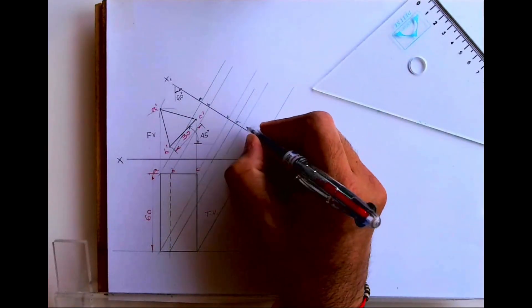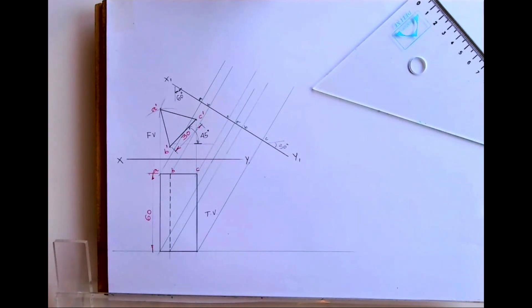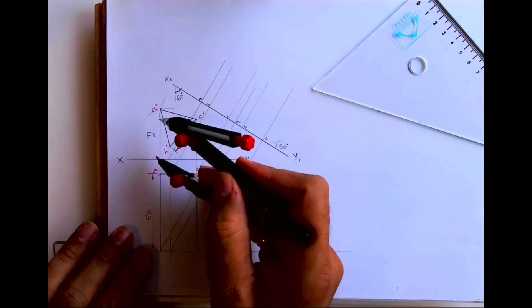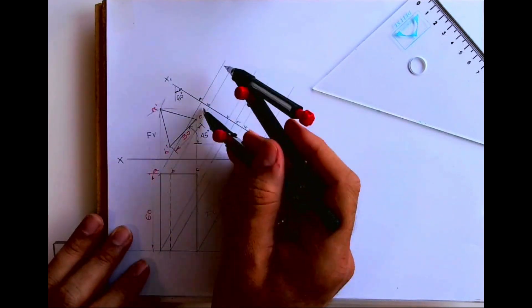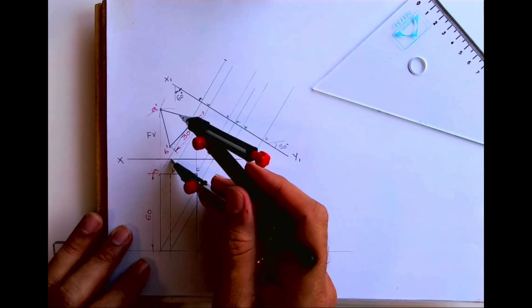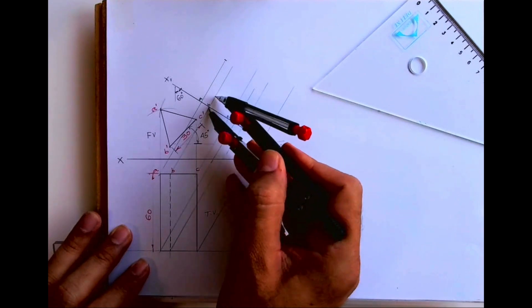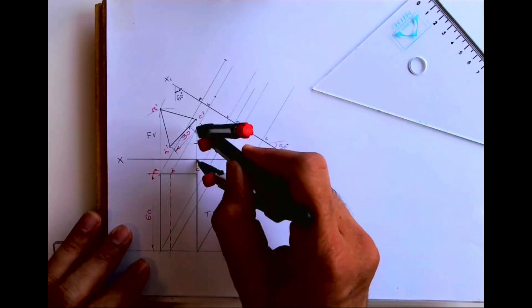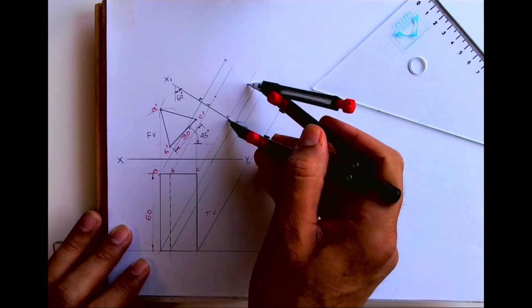Then again we'll write ABC. After that we will transfer the distance. Whatever is from XY to A dash, from A will cut it over here. XY to B dash, from B we will cut it over here. XY to C dash, from C we will cut it over here.